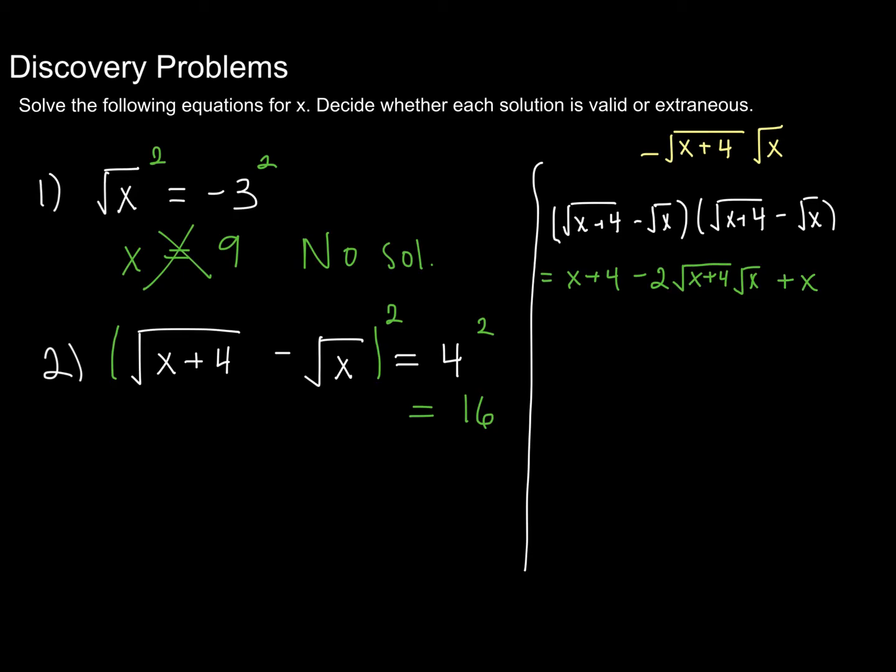All right. So notice I can simplify this a little bit, because I have x plus x, which is two x. So I can rewrite this as two x plus four minus two times. Now, notice that both of these things are being square rooted. In other words, both of them are being raised to the one half power. And so I can just write them as being multiplied together and then raised to the one half power or square rooted. So I can rewrite it as x plus 4 times x square root.